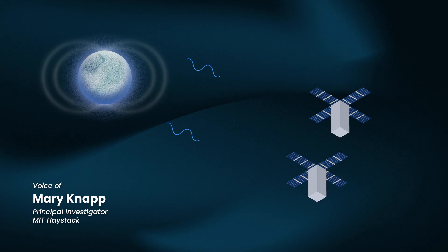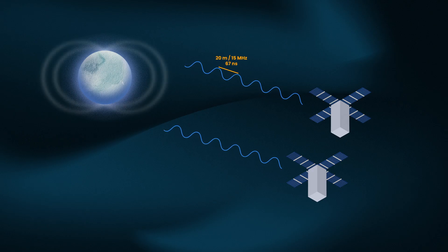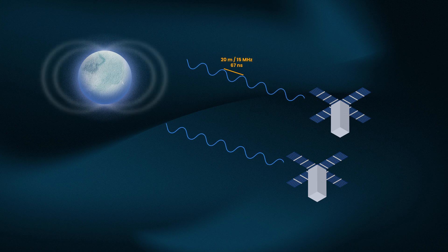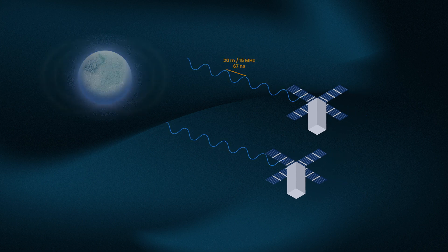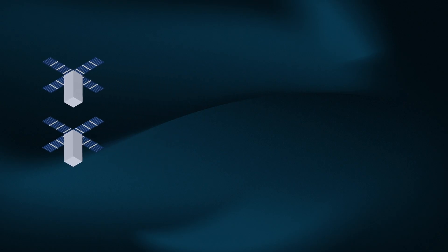Interferometry relies on accurate timekeeping to phase up the radio waves that each LN measures. The spacecraft need to be able to measure the arrival of each wave peak accurately so that the waves can be added together constructively. Due to the speed of light, waves can get out of phase even with very small timing errors.